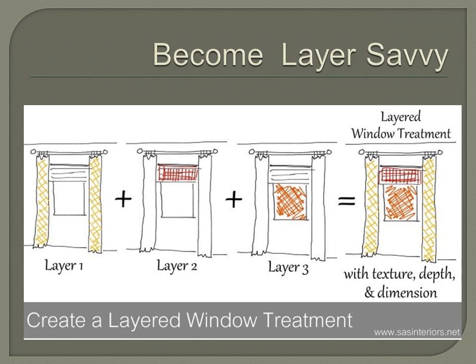So maybe you have a blind or shade for privacy and light control, sheers as a second layer, and then your third layer is your over-drapery — maybe stationary panels. Looking at three layers adds texture, depth, and dimension: a functional layer, a pretty layer, and a dimensional layer.